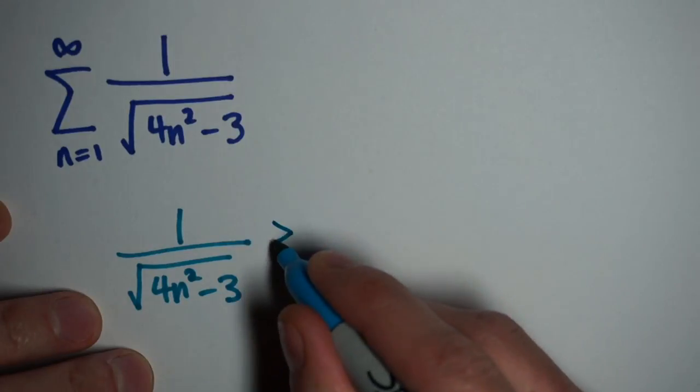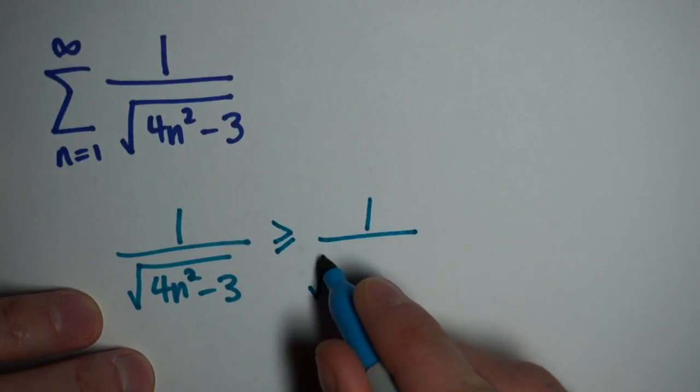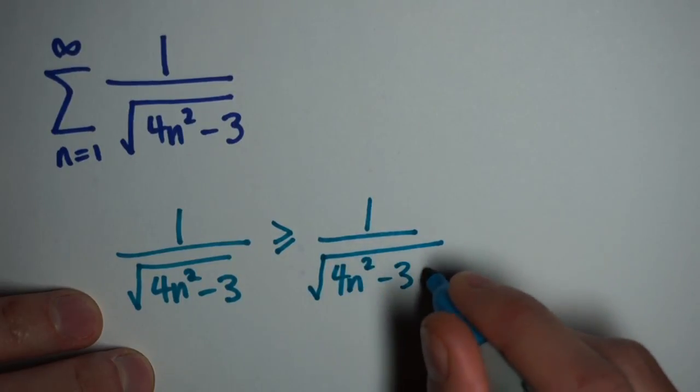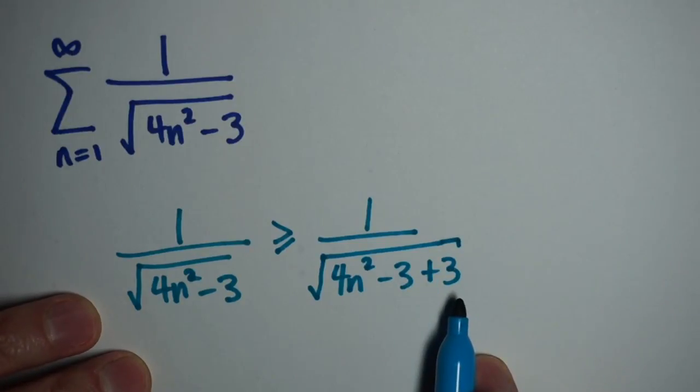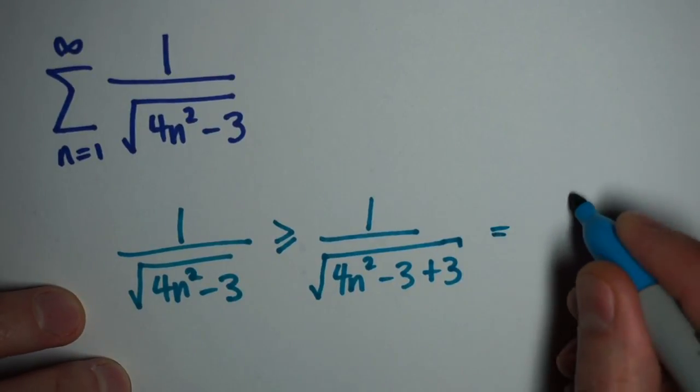So I need to make my function smaller. And one way to make something smaller is to add to the denominator. If I add something to my denominator, I'm going to be dividing by a larger number, which is going to yield a smaller result. So I add 3 to my denominator. In doing so, I'm going to simplify my function and end up with something I can understand.